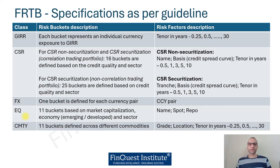It makes sense to have these equity buckets because the riskiness of a company changes depending on its size — we can have large-cap, mid-cap, and small-cap companies, each carrying specific risk. The riskiness based on the stage of the economy is also captured, which is why emerging and developed economy categories are defined as part of the risk bucket, along with the sector in which the company operates.